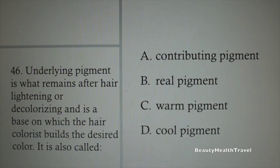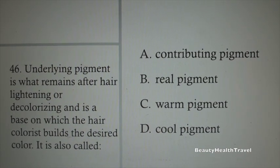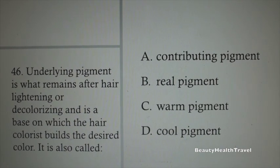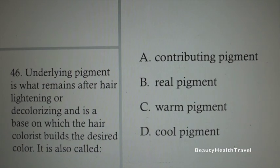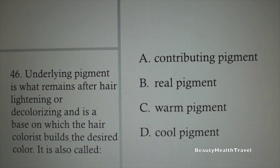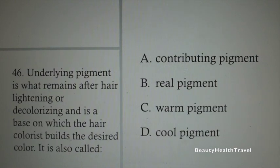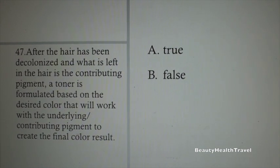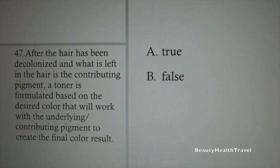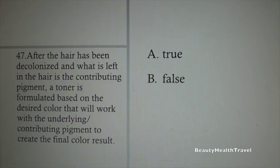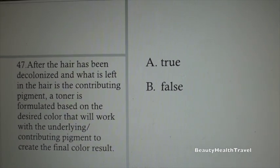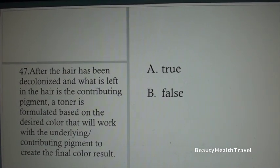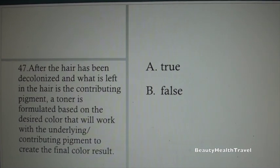Question 43: What has the power to decolorize, dissolve, or diffuse natural hair pigment and previously colored artificial pigment? A. Temporary tints, B. Certified colors, C. Lighteners, D. None of the above. Question 44: Lighteners are mixed with: A. Hydrogen peroxide, B. Cuticle remover, C. Diogel, D. Sodium hydroxide.